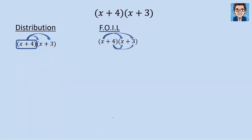Now the next method: FOIL. FOIL is an acronym standing for First, Outer, Inner, Last. The first terms are the first of each — so x times x gives us x squared. The outer two are x and 3, so 3 times x gives us 3x.